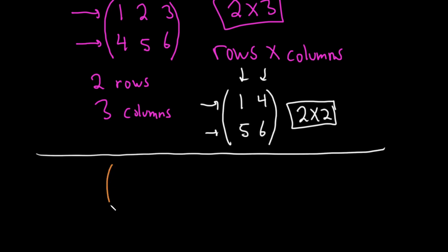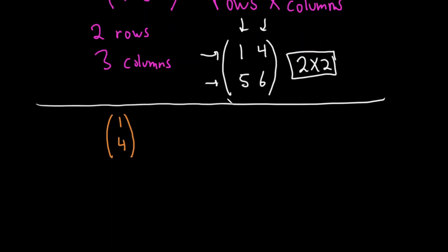Let's do another example. Say we have the matrix 1, 4. This is called a column matrix, by the way. That's because you have exactly one column. So you have 1, 2 rows. So 2. And 1 column. So 1. So 2 rows by 1 column. So it's a 2 by 1 matrix. Again, this is called a column matrix.